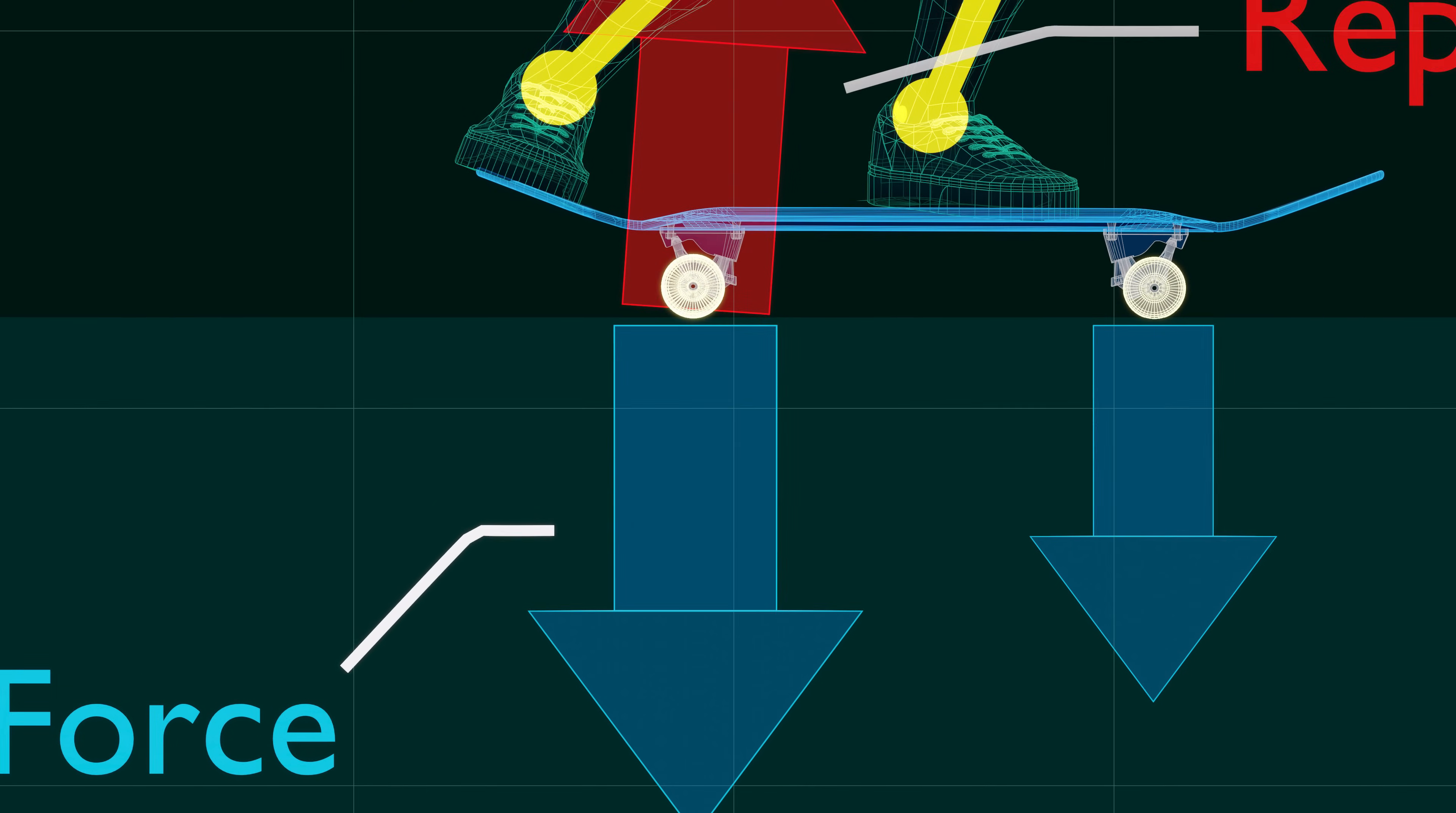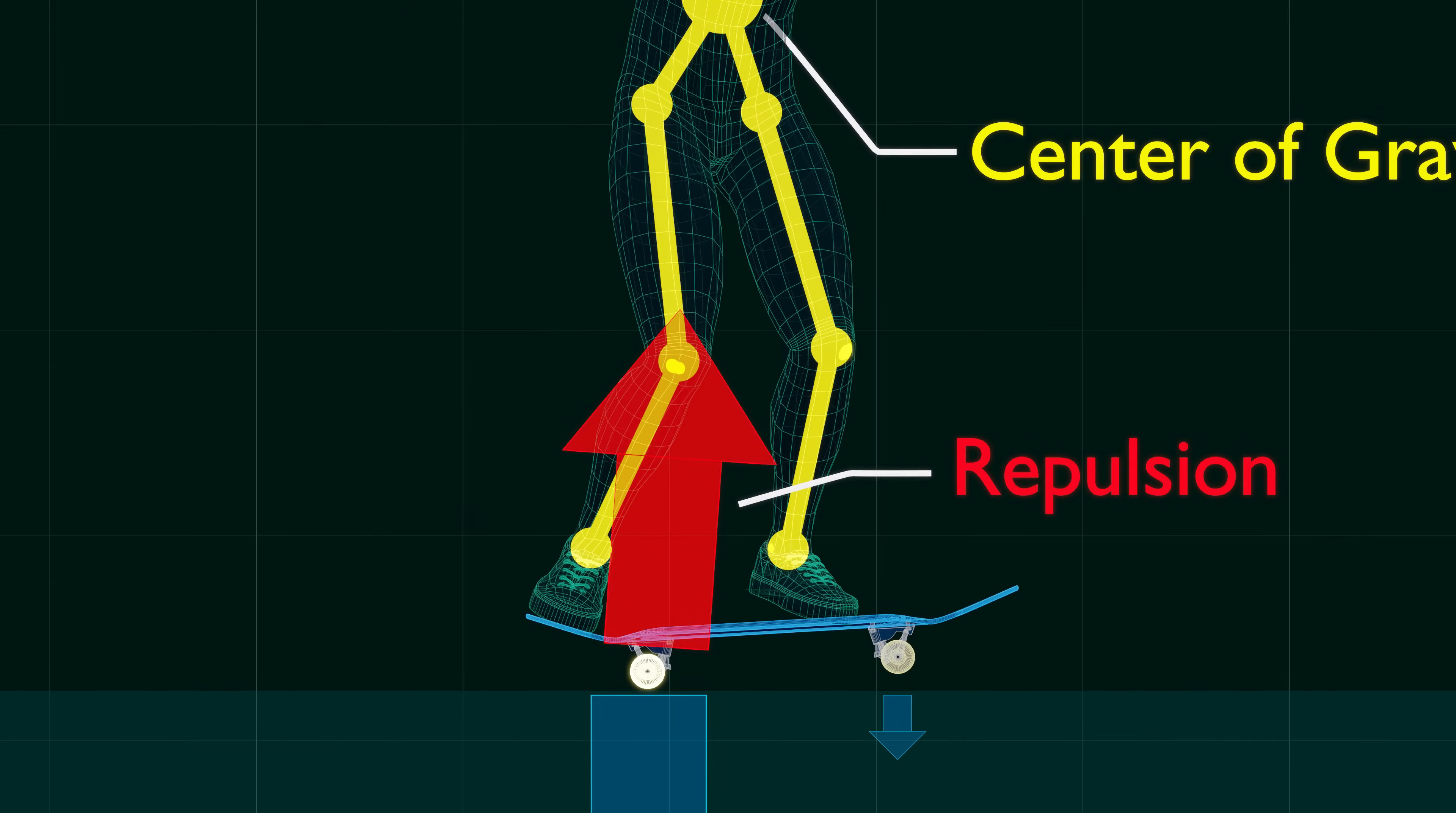Once again, the tail does not transfer your weight to the ground. It is the role of the wheels.